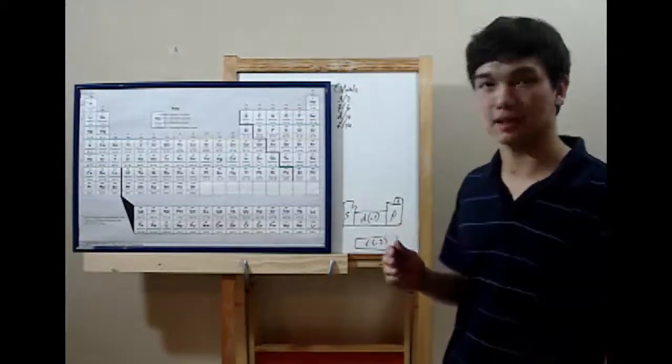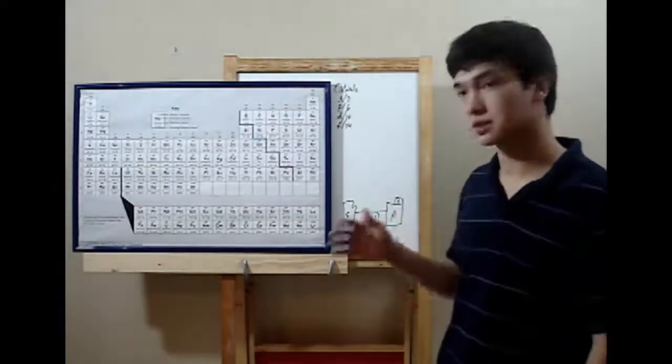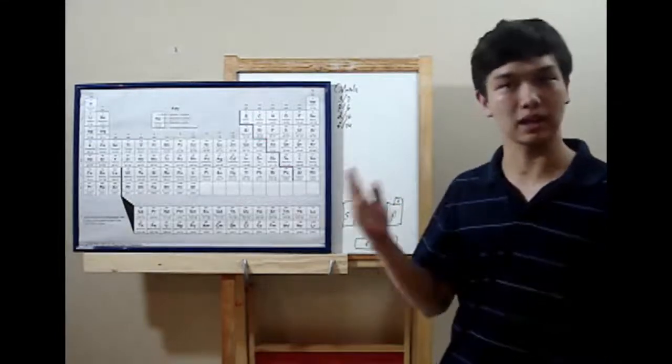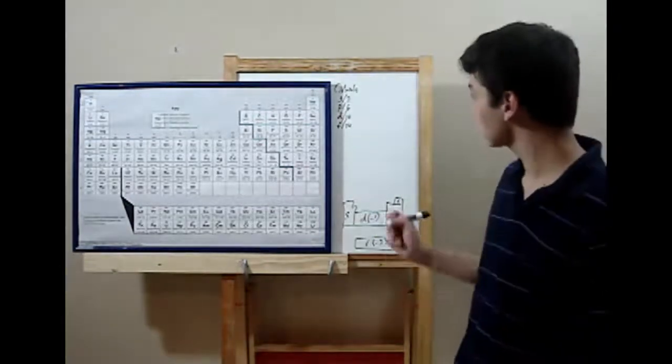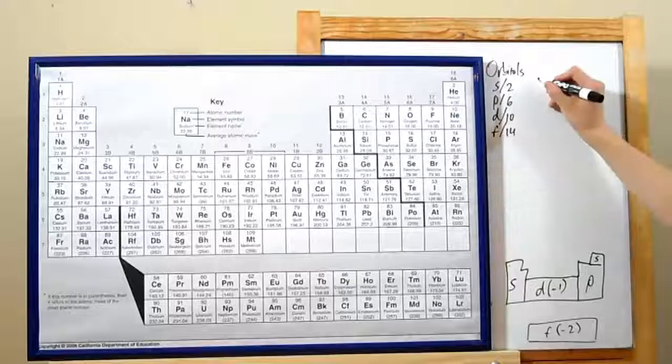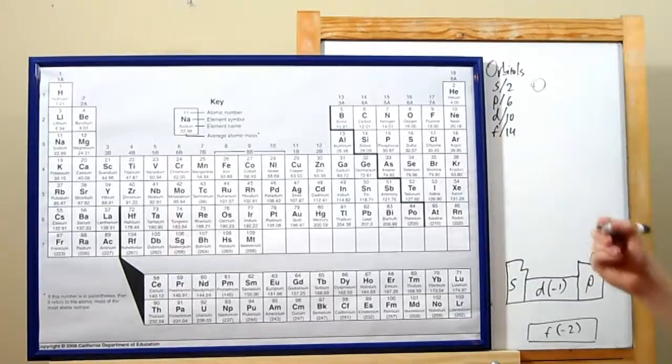The quantum model of the atom tends to describe orbitals. Orbitals, remember, are the paths that electrons will take around the nucleus of an atom. First off, there are s orbitals. These are shaped spherically and can hold at most two electrons.